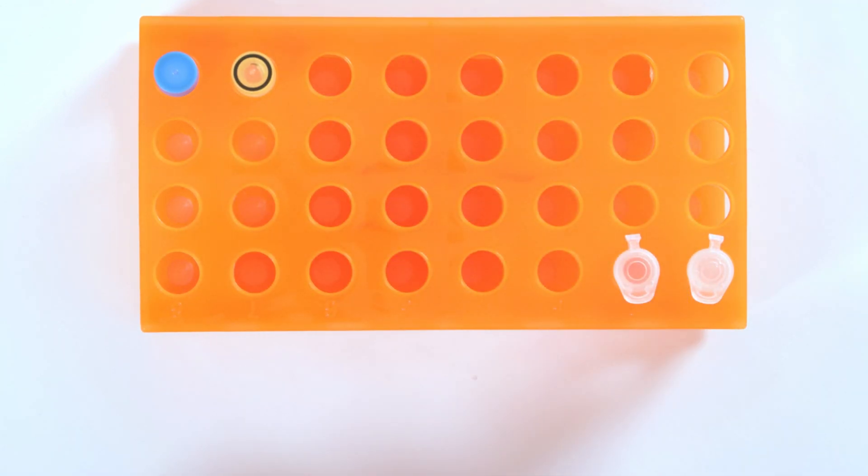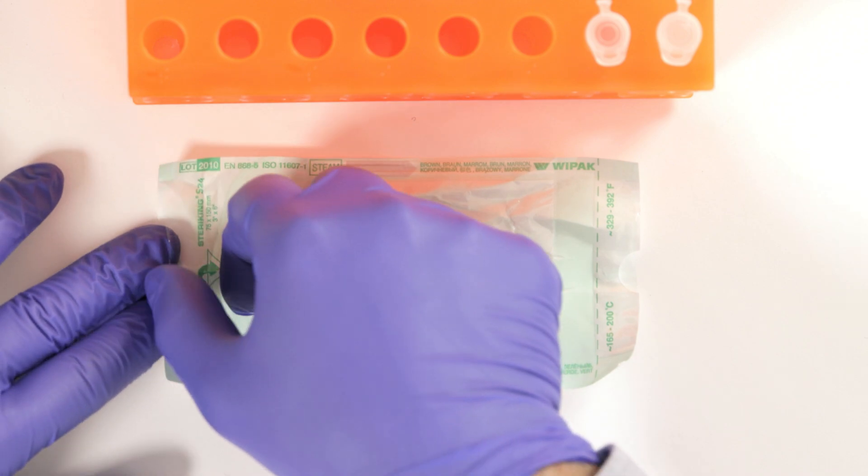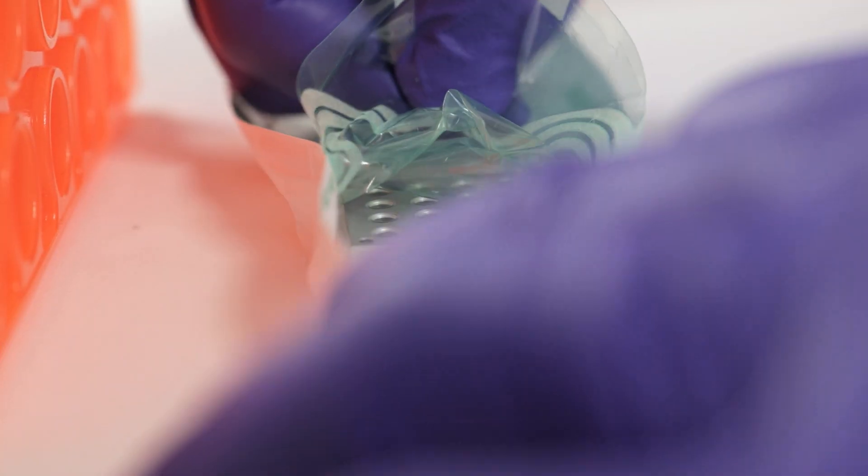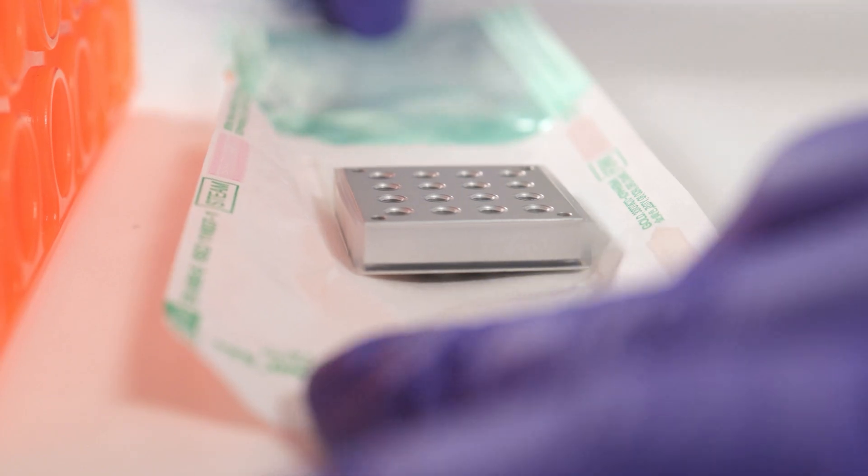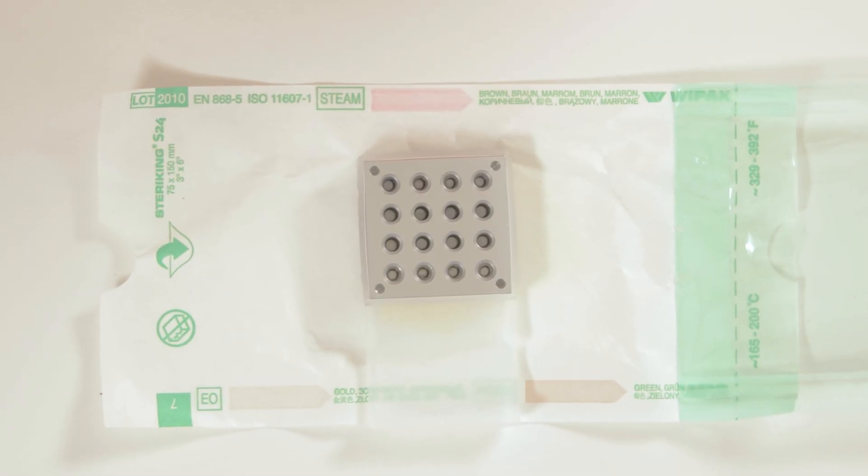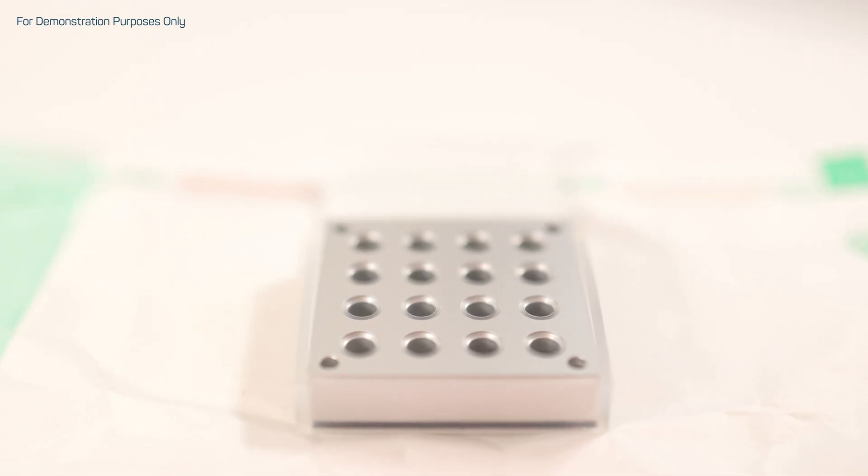When reagents from the HiRIS B-Kit are thawed, the operator can put them in place on the tube rack. Now it's time to open a brand new cartridge. Depending on the specific HiRIS B-Kit chosen, up to 6 or 16 tests can be run simultaneously thanks to the format of the included HiRIS cartridge.